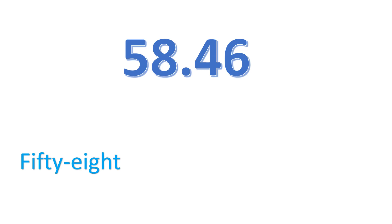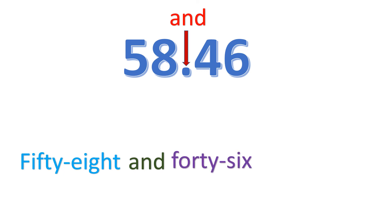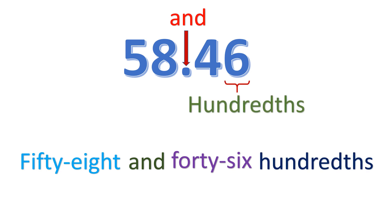Another example: we have 58.46. We start with the whole number, 58, and then the decimal point, which means 'and.' The number at the right side of the decimal point is 46, and the rightmost place value is the hundredths place, so we put hundredths. The whole decimal number is 58 and 46 hundredths.